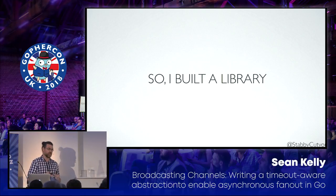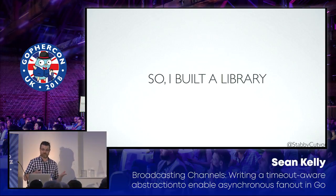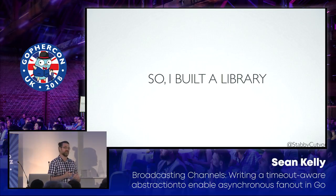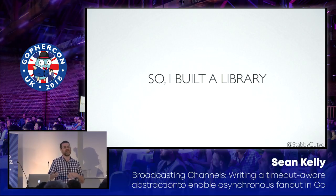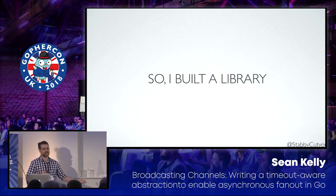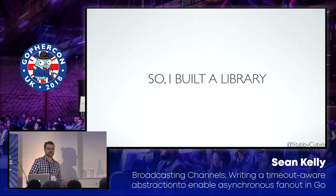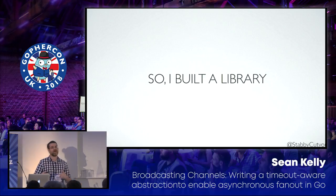I thought it would be interesting to walk through the trade-offs and problems I ran into, as a way to teach about the concept of fan-out and broadcast and how you might implement it in Go — but also potentially other languages as well. It's also a bit of an allegory about how your best intentions can spiral out of control once you start poking at the bear. I wrote code solely to write code, without a specific problem I was trying to solve.